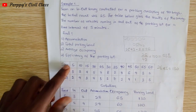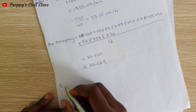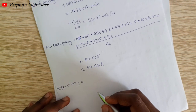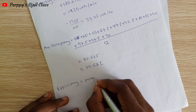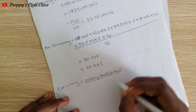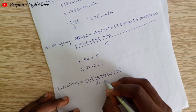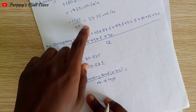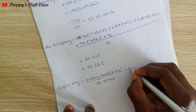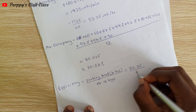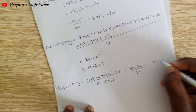The last part asks for the efficiency of the parking lot. Efficiency is equal to the parking load in hours divided by the number of bays. The parking load in hours is 32.25 vehicle-hours, divided by 40 bays, which gives us 80.625 percent as the efficiency.